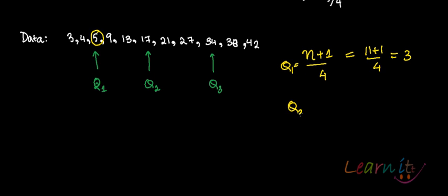Third quartile is 3 n plus 1 by 4. So which is 3 into 11 plus 1 by 4 which is 9. Observation. So 1, 2, 3, 4, 5, 6, 7, 8, 9. 34 is the third quartile.